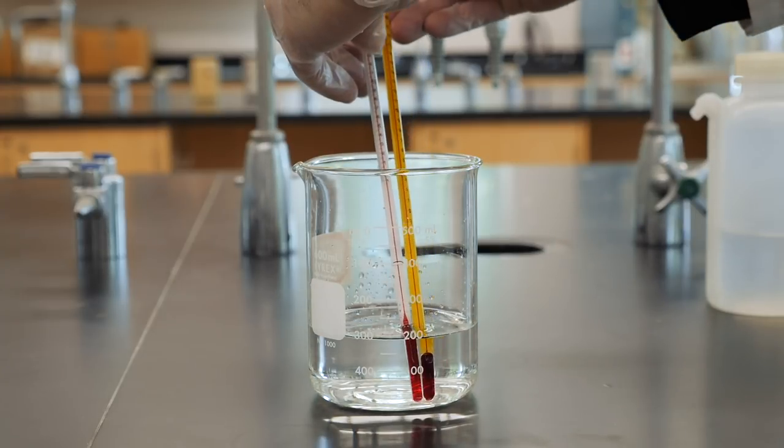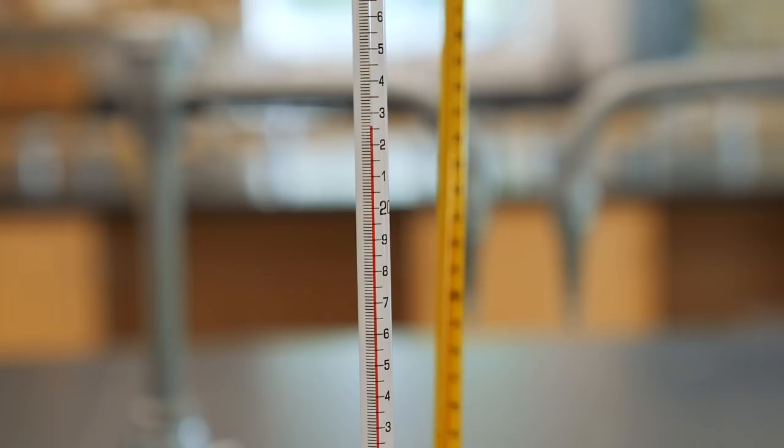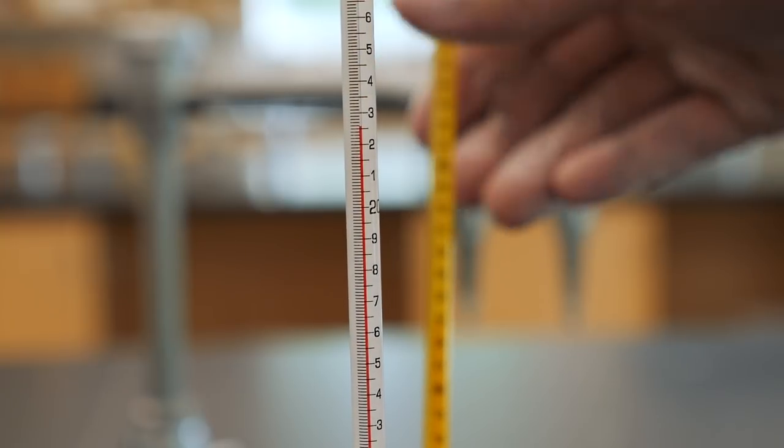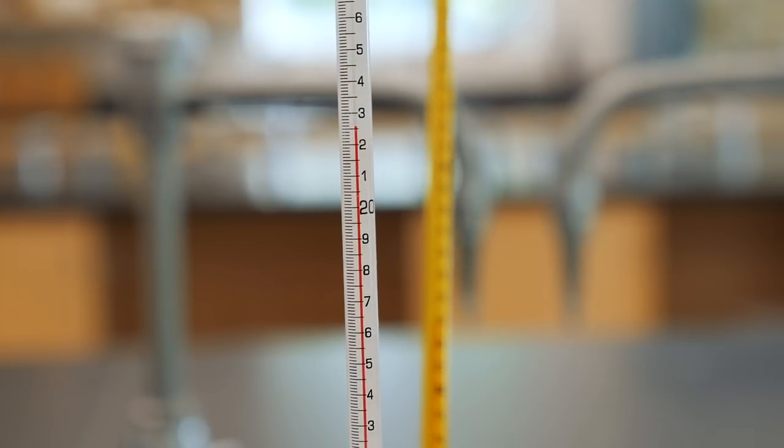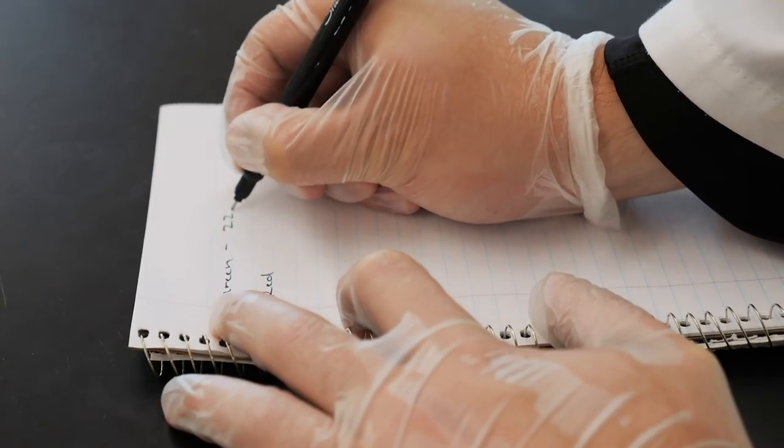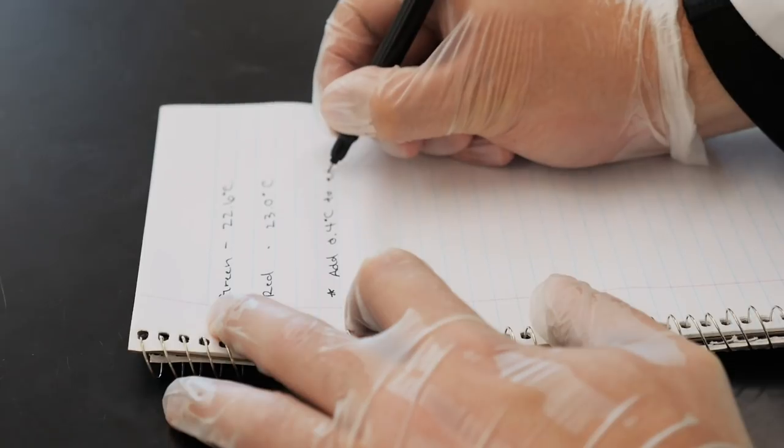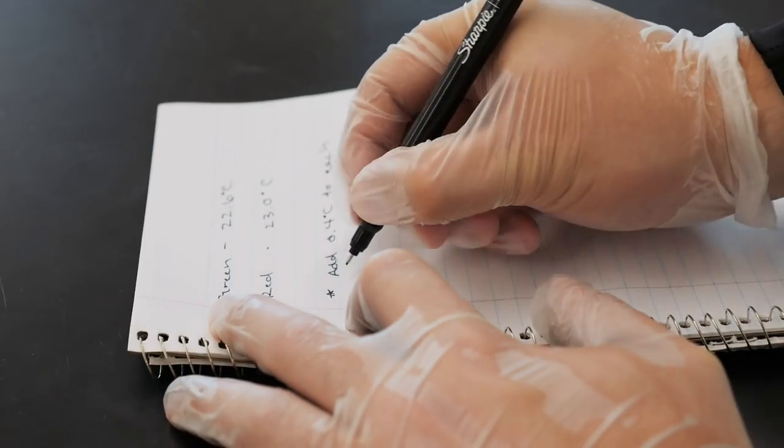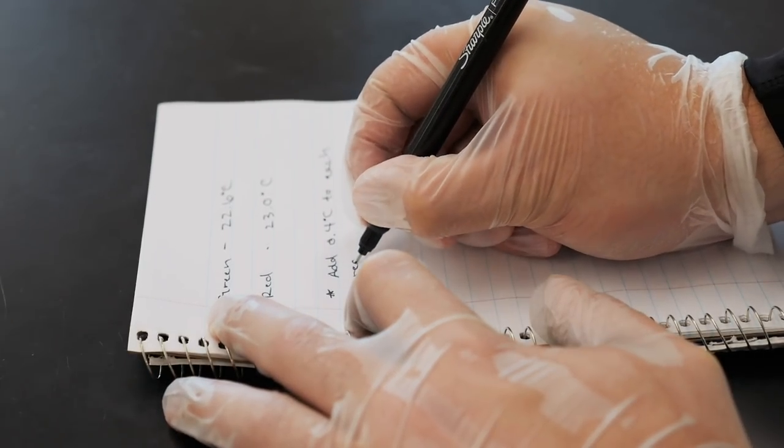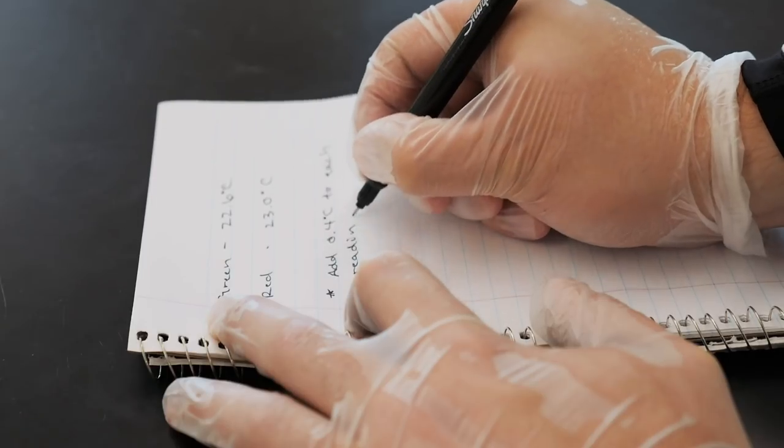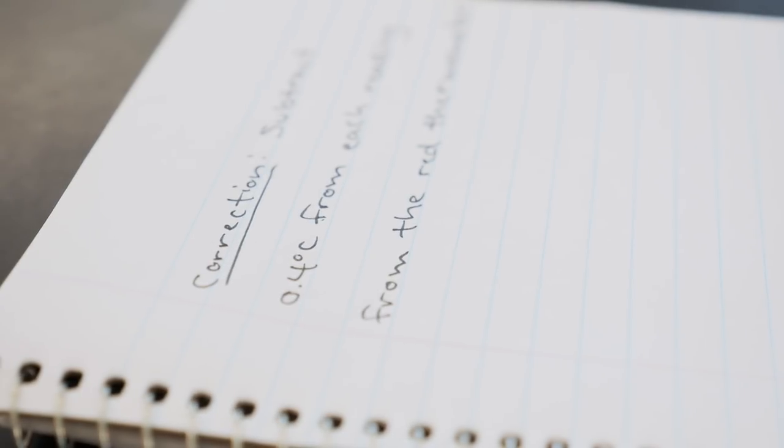Then put both thermometers in the same beaker of room temperature water, record the readings of both thermometers, and calculate the correction that must be applied to the second thermometer to yield a value that's consistent with the value of the first thermometer you chose. This small number of degrees, whatever it is, will need to be applied as a correction to your reading from the second thermometer all day. So don't forget.